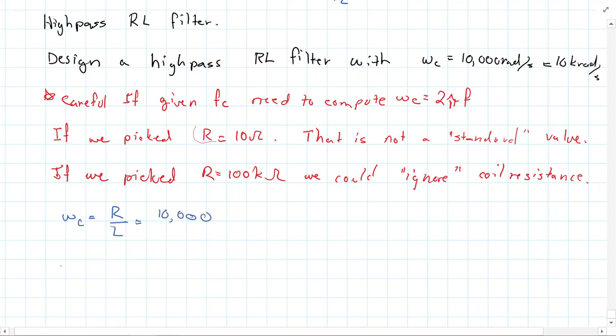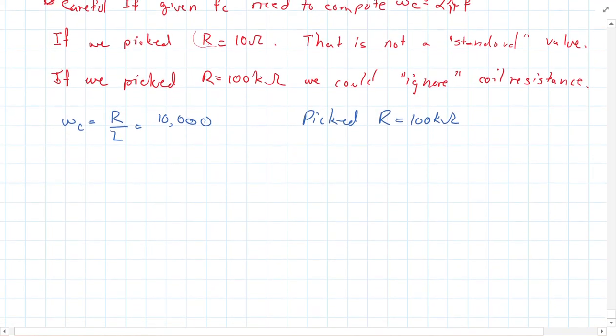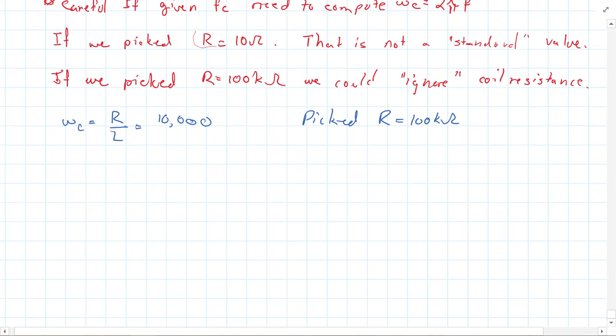Remember here, let's go ahead and start tackling this. Omega C is equal to R over L, which needs to be 10,000. So if we picked R to be 100 kOhms, then I'd have 100,000 over L equals 10,000. Which, as we said, if we solve for L, L would simply be 10 Henrys. But this is a large value for an inductor.